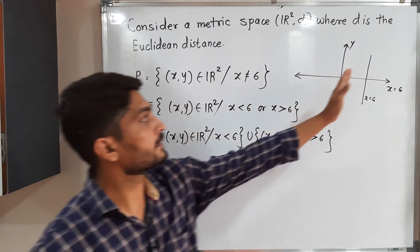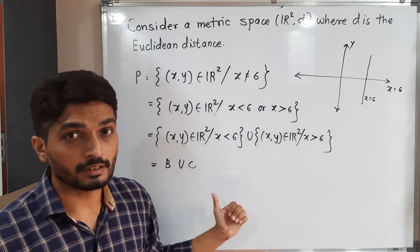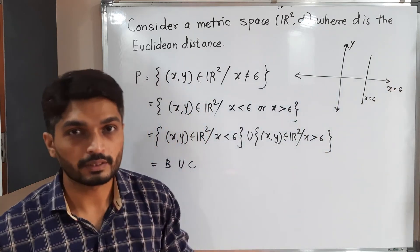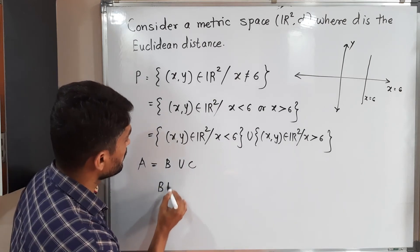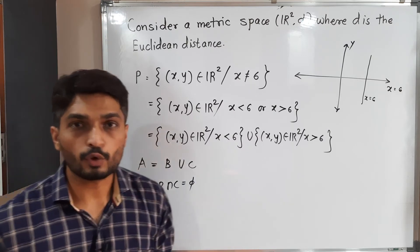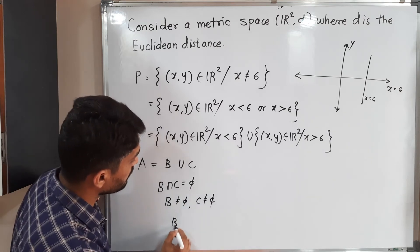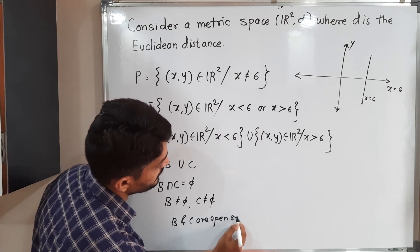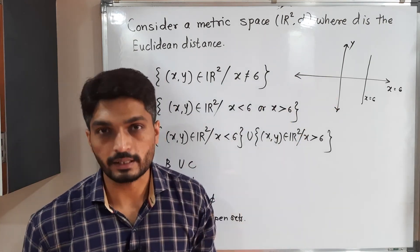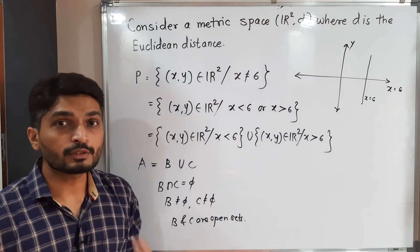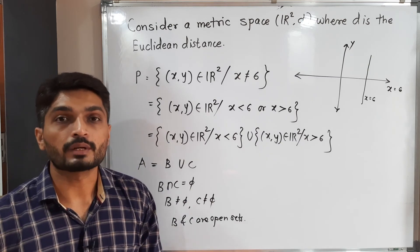The same logic we can use. Here A = B ∪ C. B ∩ C = ∅. Nothing is common there. B and C both are non-empty sets. And the last one: B and C are open sets. For any point in that set, it is possible to draw a ball around it which entirely lies inside the set. Therefore, B and C both are open sets. We express A as a union of two non-empty, proper, disjoint, open sets. Therefore, we can say A is disconnected.